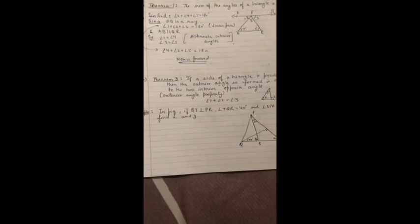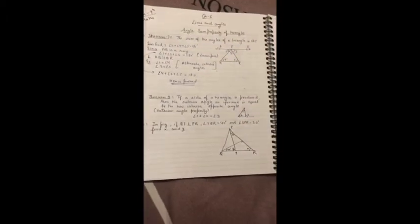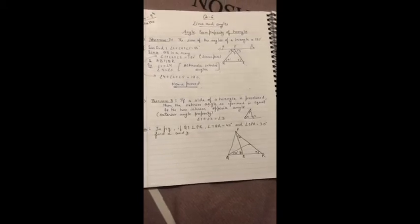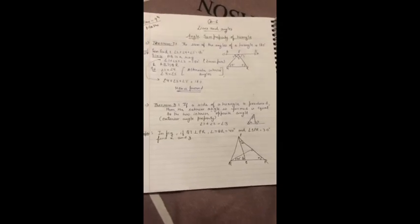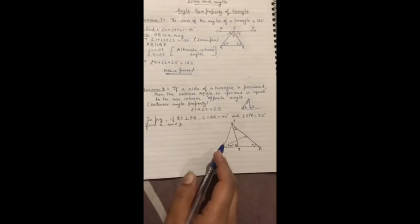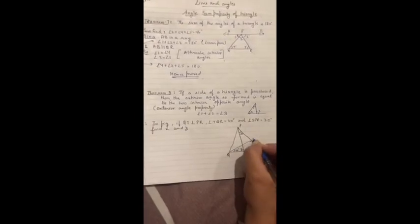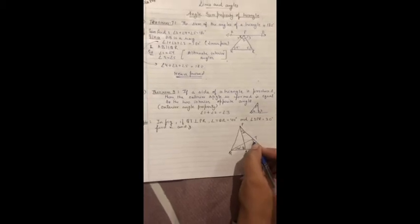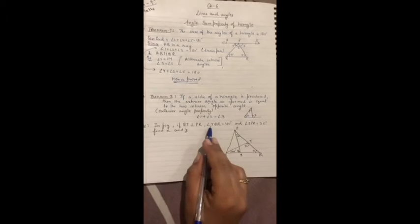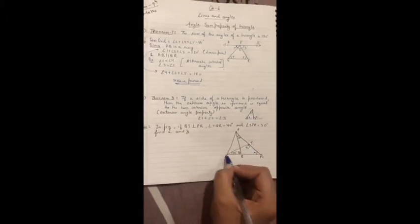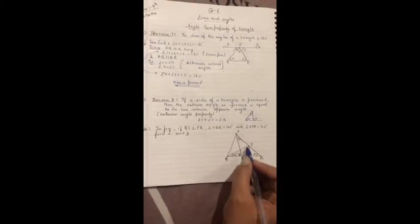Interior opposite angles ka sum, exterior angles ke equal. That is also called exterior angle property. This you have also studied in 7th class. Now on the basis of these two theorems we have two examples. First, in the figure, if QT is perpendicular to PR, that means it is of 90 degree. Angle TQR is 40 degree, this is 30 degree.